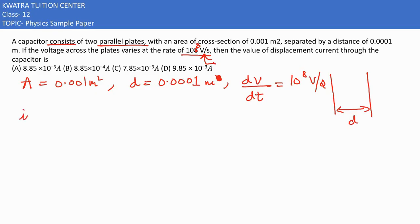Then they are saying find the value of displacement current. So id would be equal to epsilon naught, and then I have del phi e over dt. Phi with respect to time will change. And phi ki value is equivalent to v times a,